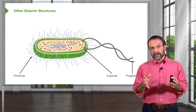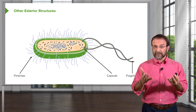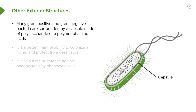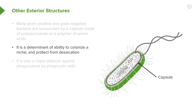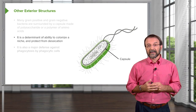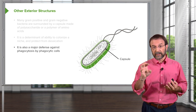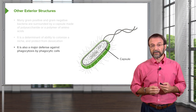There are other exterior structures of the bacterial cell we should discuss: the fimbriae, the capsule, and the flagellum. Many gram-positive and gram-negative bacteria have an outer capsule, usually made of amino acids or sugars. The capsule has several functions: it determines the ability to colonize a specific niche — an organ or a particular environment. It also protects the cell from drying out or desiccating. Additionally, the capsule is a defense mechanism against immune attack, as phagocytic cells often try to engulf bacteria and the capsule may prevent that.